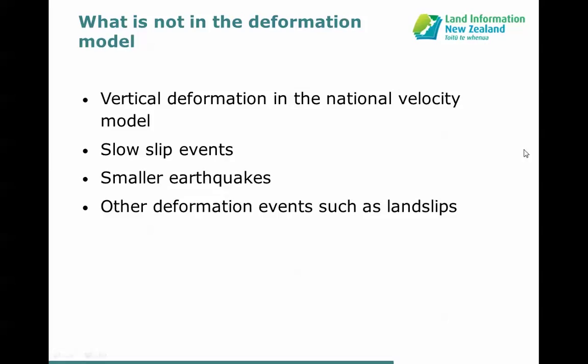What's not in the deformation model? There's quite a lot of deformation we don't include. The most significant is vertical deformation. There is ongoing vertical deformation just as there is horizontal, but in our secular model we don't include it. The main reason is that we haven't developed a good national vertical model or a geophysical model on which to base it. Vertical deformation is also a lot messier than horizontal — there tends to be much more local movement rather than broad national trends. Even if we generated a vertical model, it may not be useful because of the noise-to-signal ratio.